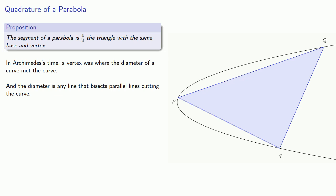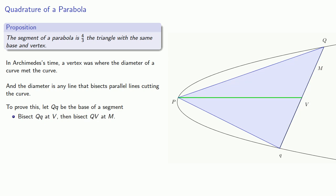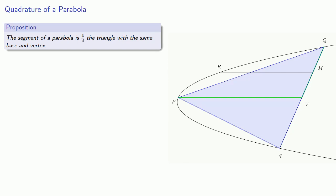So Archimedes proves this result as follows. Let QQ be the base of a segment, and bisect QQ at V, then bisect QV at M. And since we have a line that's been bisected, we can draw a diameter going through the vertex P, and we'll draw another line RM parallel to PV. So remember by the property of the parabola, the ratio of the squares of the lines drawn ordinate-wise is equal to the ratio of the ordinates. And so QV squared is to RW squared as PV is to PW.